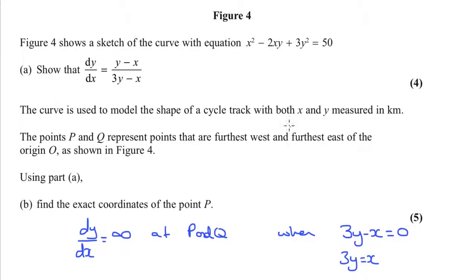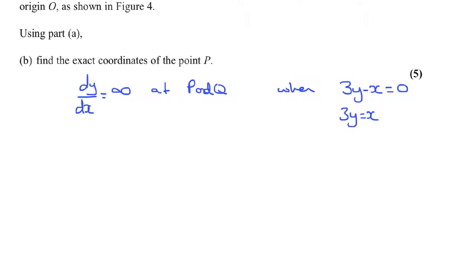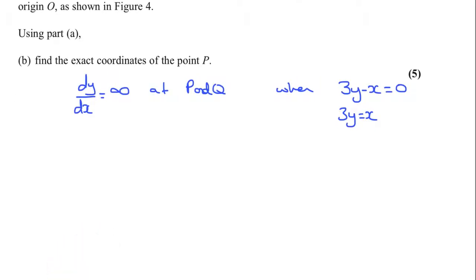We know two things now. We know that the equation is true at P, and we know that this is true at P. So, we've got, essentially, a pair of simultaneous equations. If I swap every x I see for 3y, I can solve this equation. It will just have y's in it. So, it's a simultaneous equations question, and that's quite common for this type of implicit differentiation question.